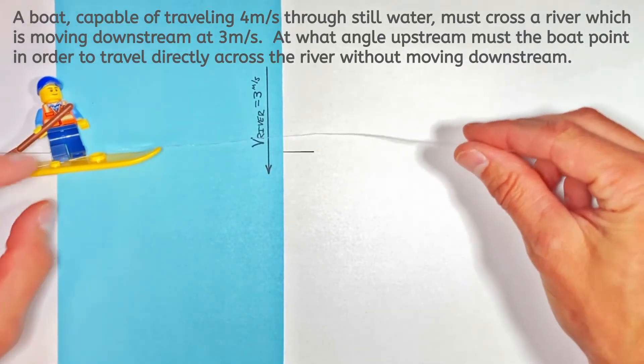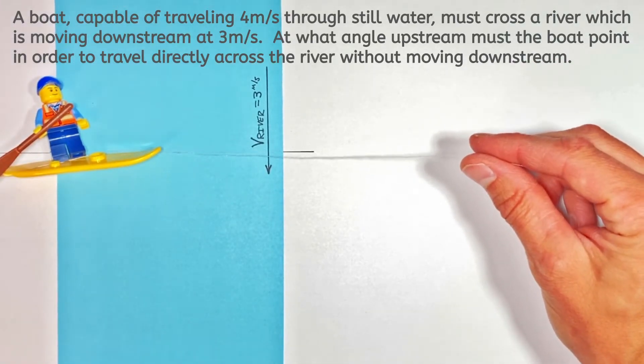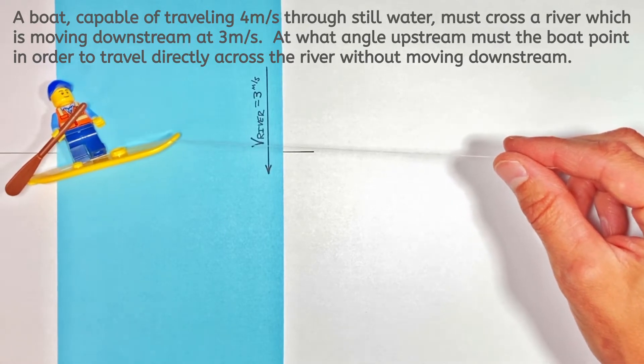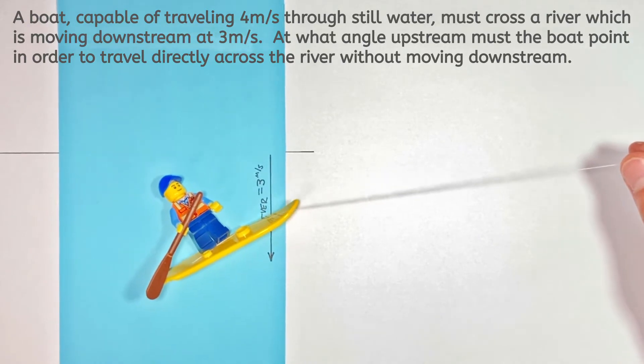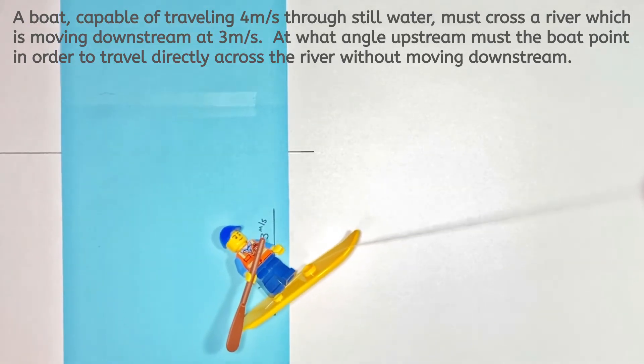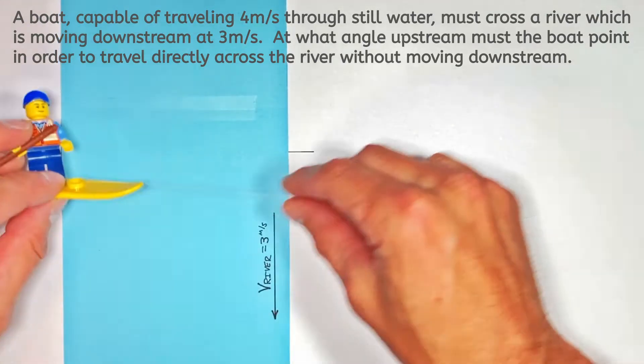Alright YouTube, previously we were looking at the boat across a river problem where we had a little guy trying to paddle across a river, but the river was flowing downstream. In that problem, we tried to solve for the displacement of the dude and his boat downstream as the river was flowing.